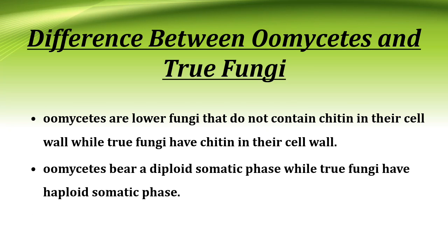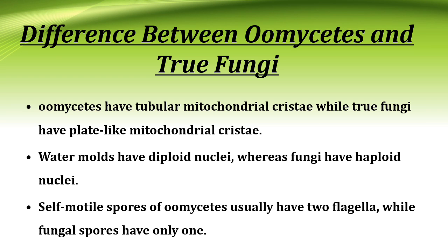Differences between oomycetes and true fungi: Oomycetes do not contain chitin in their cell wall, while true fungi have chitin in their cell wall. Oomycetes bear a diploid somatic phase while true fungi have a haploid somatic phase. Oomycetes have tubular mitochondrial cristae while true fungi have plate-like mitochondrial cristae. Water molds have diploid nuclei whereas fungi have haploid nuclei. Self-motile spores of oomycetes usually have two flagella while fungal spores have only one flagellum.